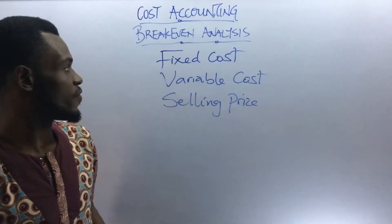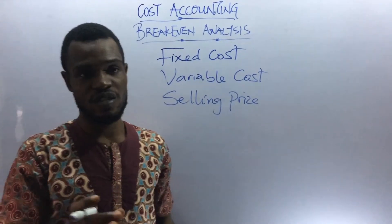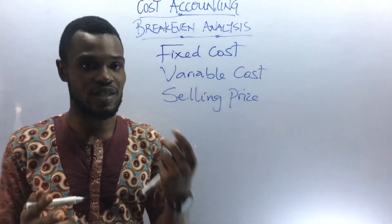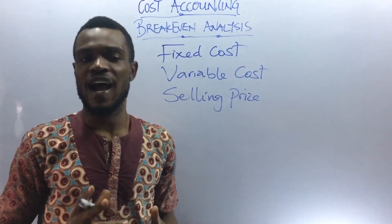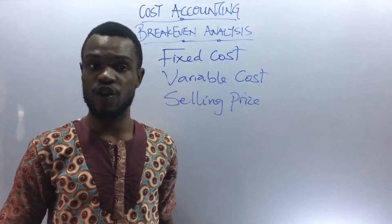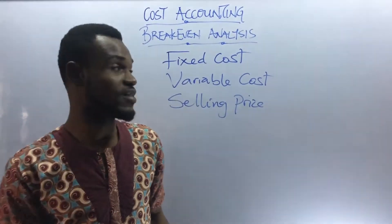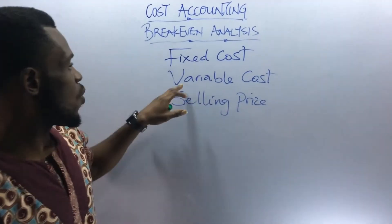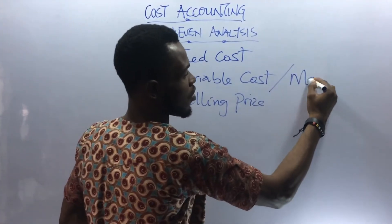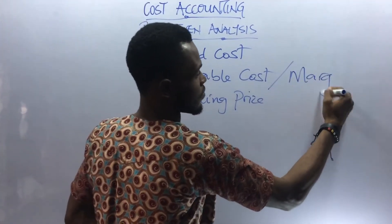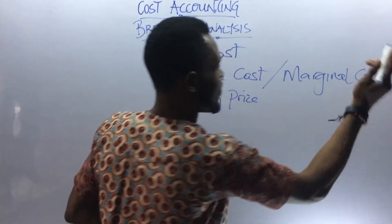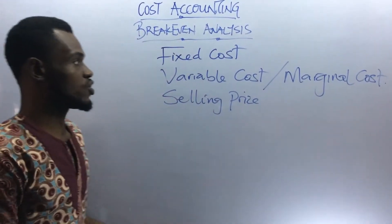Now, let me quickly tell you something about it and give us the formula. First of all, questions will be asked in two forms — either in units or in value. Value is also known as Naira. Meanwhile, variable costs can also be known as marginal costs.